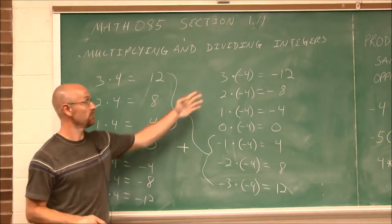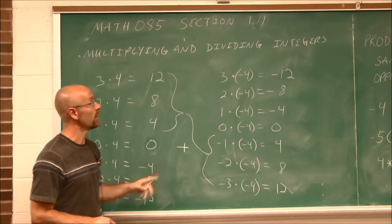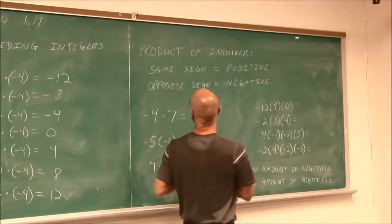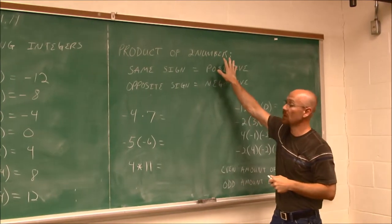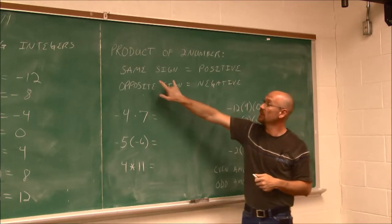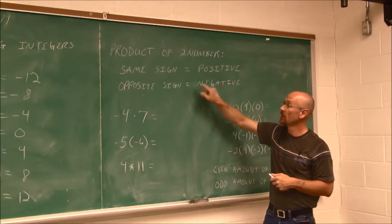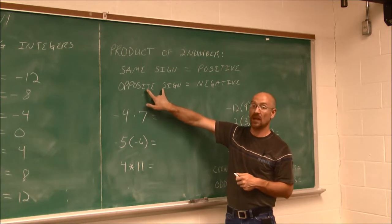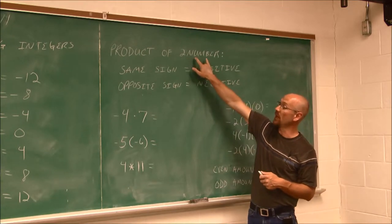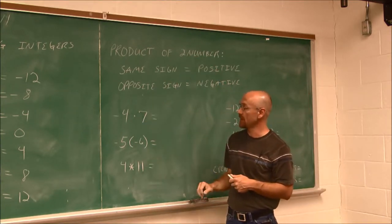If the signs are different, we're going to get a negative. Let's look at what that summarizes to. The product of two numbers — if they have the same sign, it will always be positive. If the product of two numbers have opposite signs, it will always be negative. But that's only when we have two numbers.